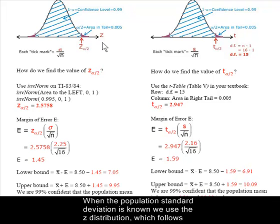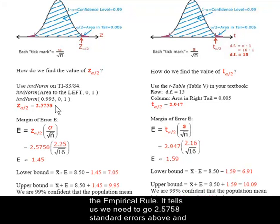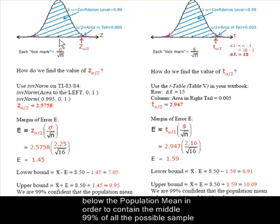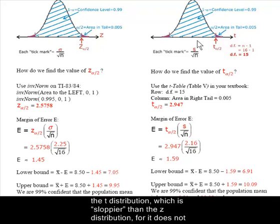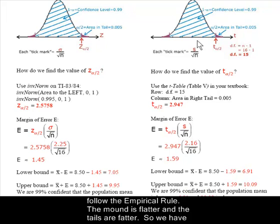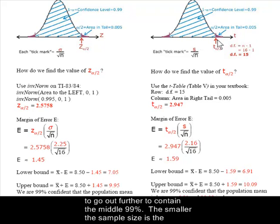When the population standard deviation is known, we use the Z distribution, which follows the empirical rule. It tells us we need to go 2.5758 standard errors above and below the population mean in order to contain the middle 99% of all the possible sample means that we could get. When the population standard deviation is not known, we use the T distribution, which is sloppier than the Z distribution, for it does not follow the empirical rule. So the mound is flatter and the tails are fatter. So we have to go out further to contain the middle 99%.